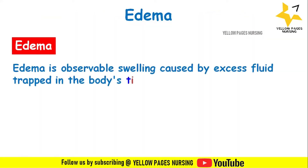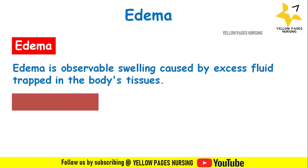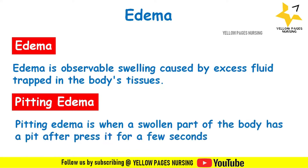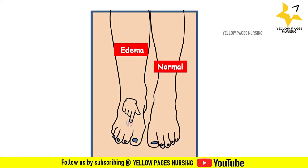There are two types of edema: pitting and non-pitting edema. Pitting edema is when a swollen part of the body has a pit after pressing it for a few seconds, whereas non-pitting edema doesn't have a pit. Here you can see an example picture of an edematous limb and a normal limb — the right limb is edematous whereas the left one is normal. On pressing the edematous limb, a pit is formed.